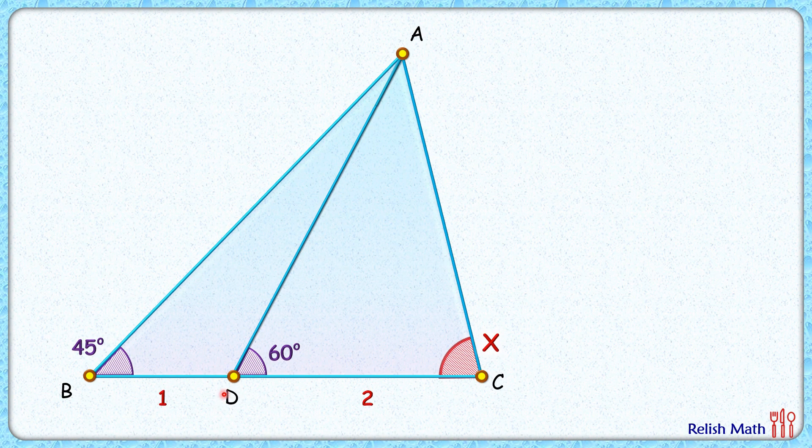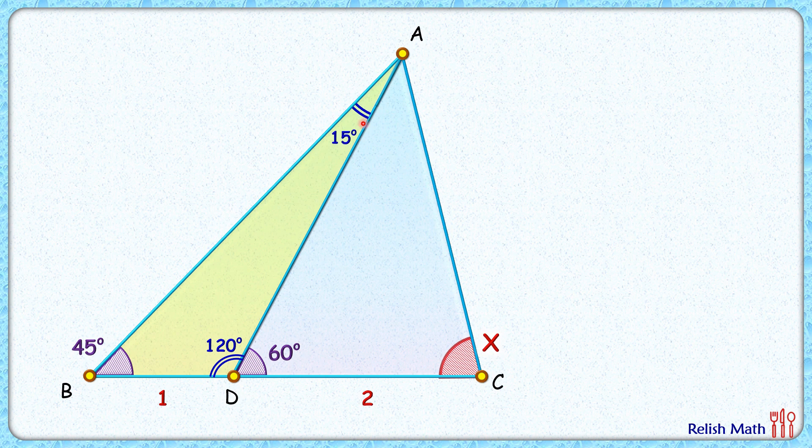Let's start with some easier angles first. This angle here, that's 180 minus 60, or 120 degrees. And in this triangle, applying angle sum property, we'll get this angle as 15 degrees.